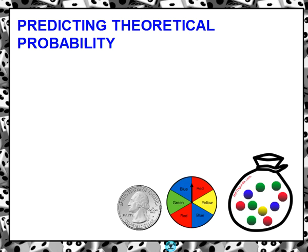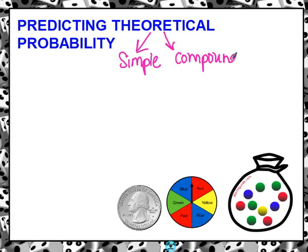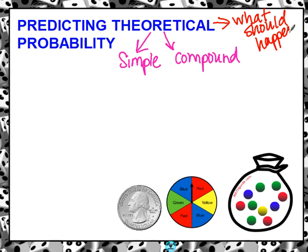We're going to talk about predicting theoretical probability. We've been talking about theoretical probability for the last couple of days, and there are two different types: simple events and compound. We're going to do a little bit of both. Remember, theoretical probability is what should happen — we haven't done any experiments. We're just talking about what should happen if we were to do this experiment.